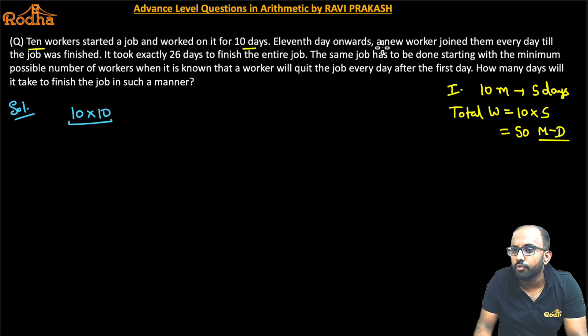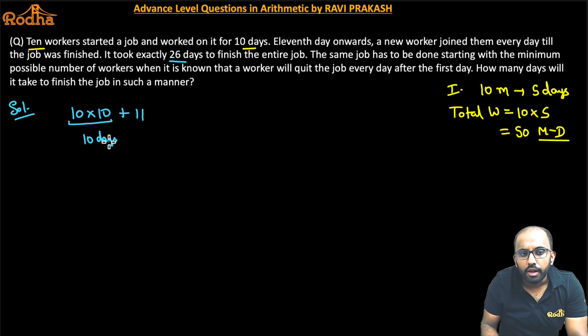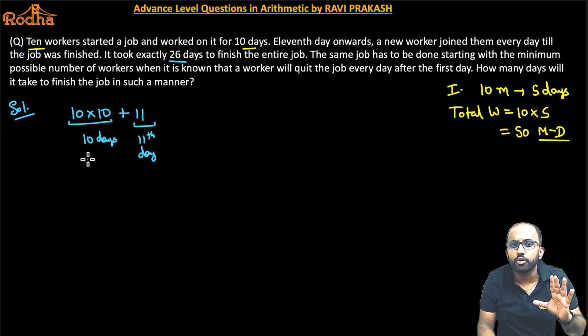Then 11th day onwards, a new worker joined them every day till the job was finished. And the job was finished in 26 days. What is this? 11th day started and 26th day till every day a worker was coming. So that's how I worked for the first 10 days. Now this is the 11th day, right. So what's the 11th day? 11 day, 11 workers will be done. And 11 workers worked for one day. That is 11th day. So I will put 11 into one here, right.